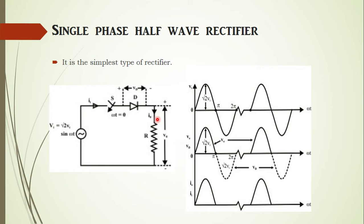So what is basically happening in this circuit? We have an AC supply as the input voltage, and a diode. During the positive half cycle, the diode is forward biased and hence it is in the ON state. As you can see, during this positive half cycle we get an output voltage.